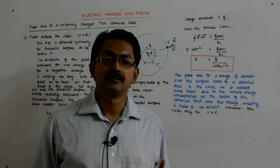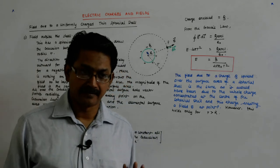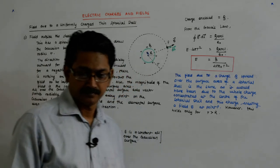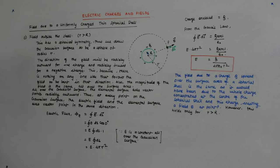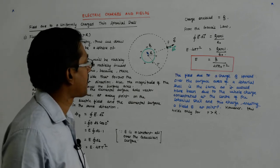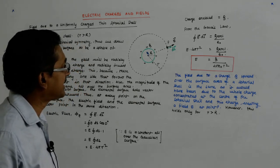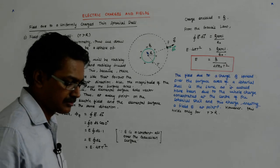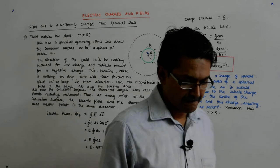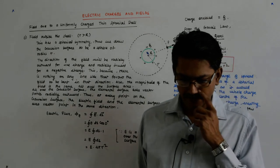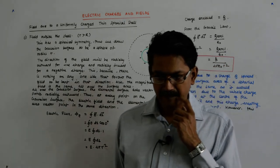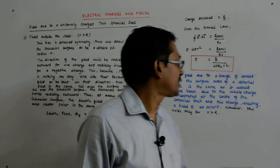Hold this in mind. What if we write E as sigma upon epsilon naught? Because the surface charge density is sigma, which is Q upon area, and the area is what the charge is spread over here.